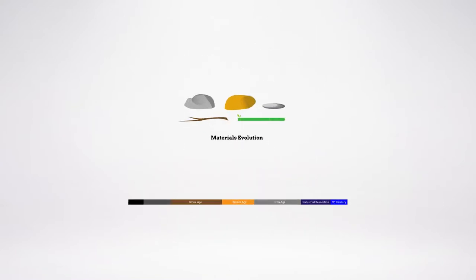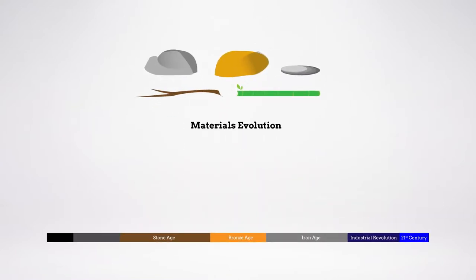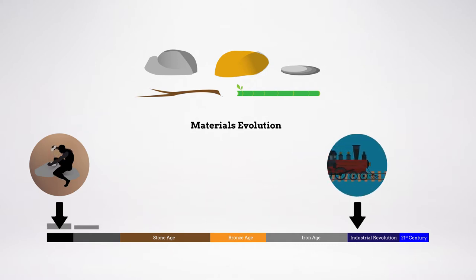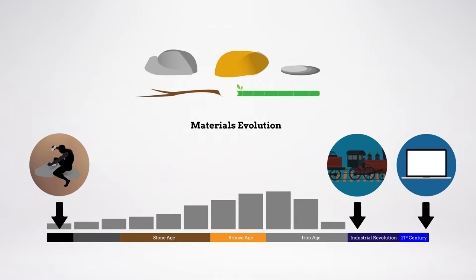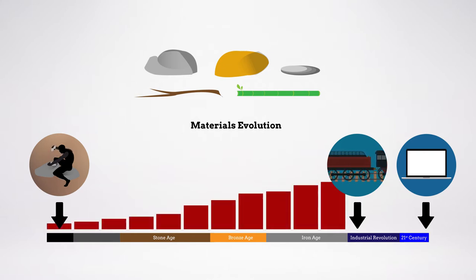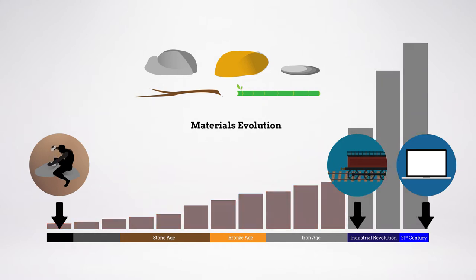The materials landscape is complex and rapidly expanding. To get a sense of how rapidly materials have recently evolved, compare the number of materials available from prehistoric times up to the 1800s with the number of materials available today. Up until the Industrial Revolution, the materials available to engineers likely numbered in the few hundreds. Today, this number stands at about 160,000.